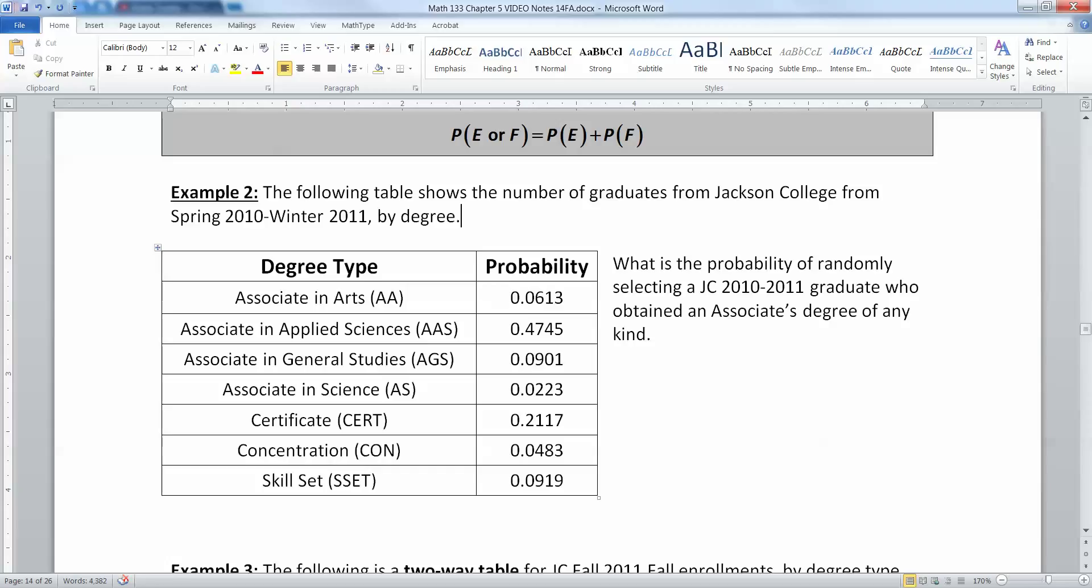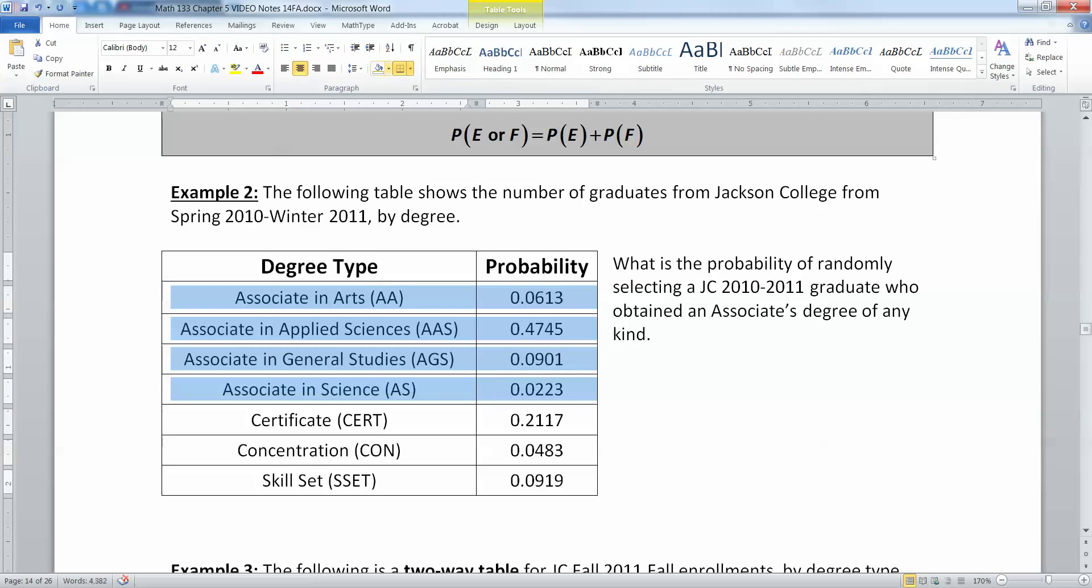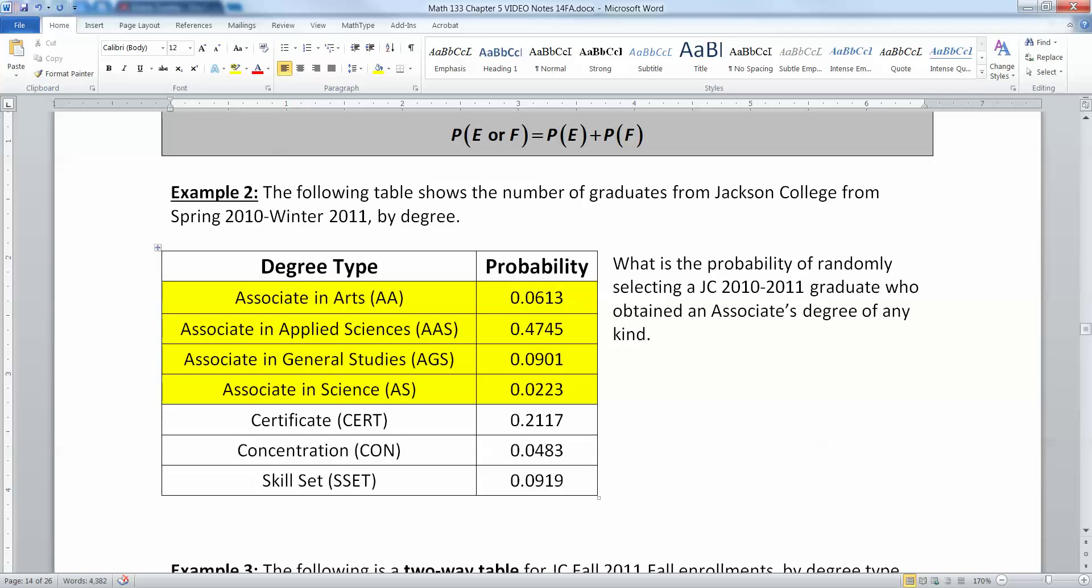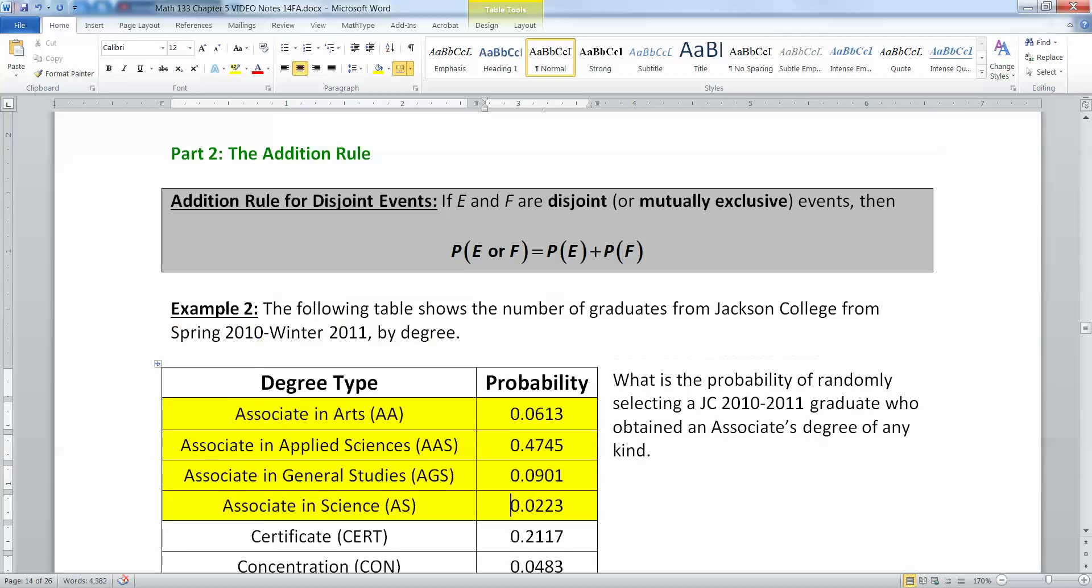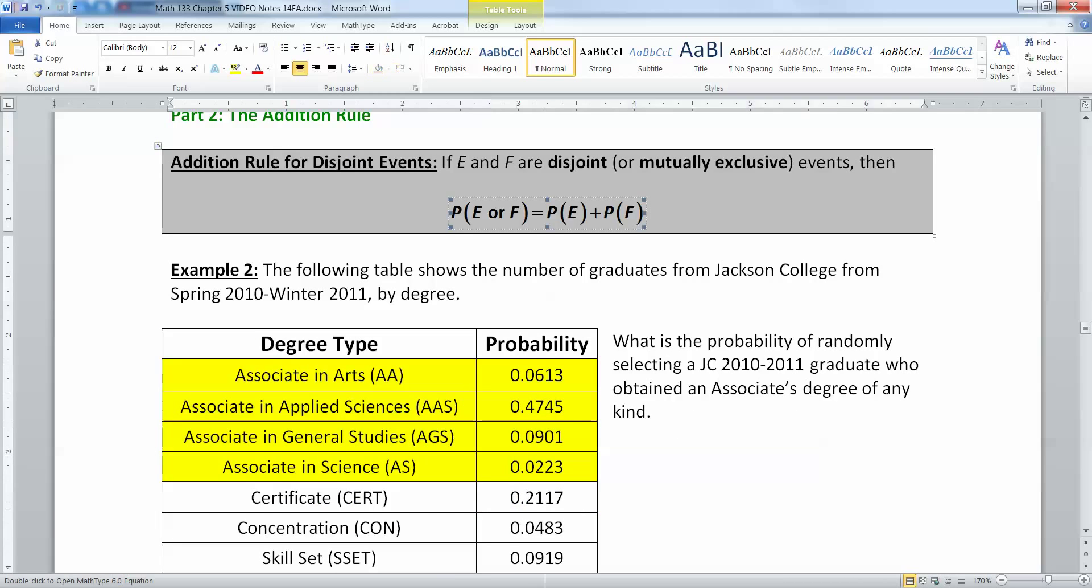Let's look here. The following table shows the number of graduates from Jackson College from spring 2010 to winter 2011 by degree. What is the probability of randomly selecting a JC 2010 to 2011 graduate who obtained an associate's degree of any kind? Keep in mind there are four different associate's degrees. I'll highlight them for you. Those four are the four associate's degrees. If you're going to get an associate's degree of any kind, it's one of those four, but they're mutually exclusive. If you have an associate in arts, you don't have one in applied science.